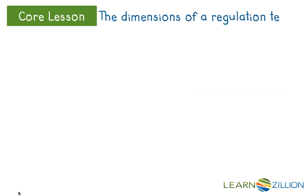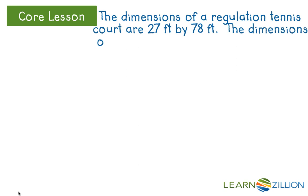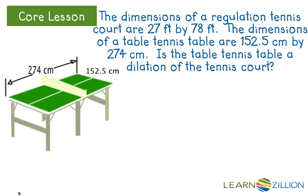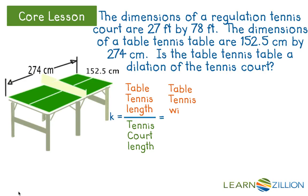If you're asked to find the dimensions of a regulation tennis court — they're 27 feet by 78 feet — and the dimensions of a table tennis table are 152.5 centimeters by 274 centimeters, you want to figure out if the table tennis table is a dilation of the tennis court. In order for this to be a dilation, the ratio of the table tennis length to the tennis court length must equal the ratio of the table tennis width to the tennis court width.